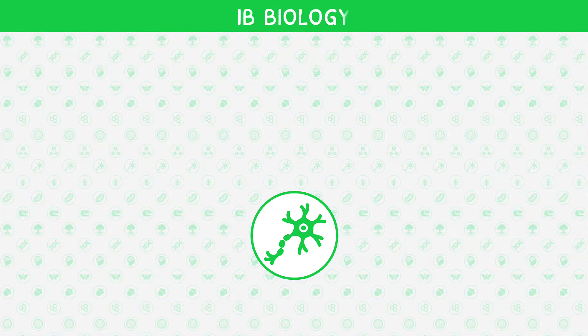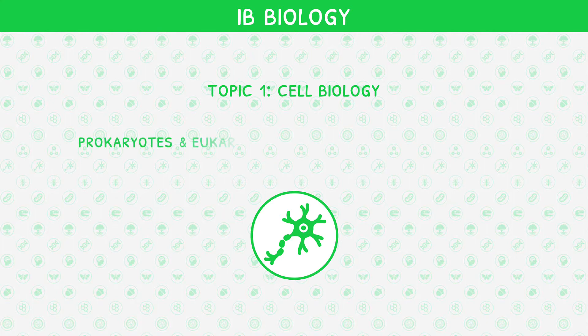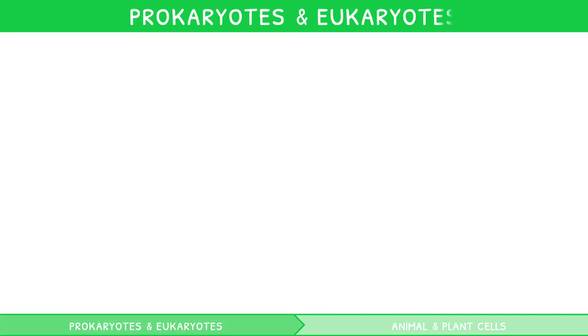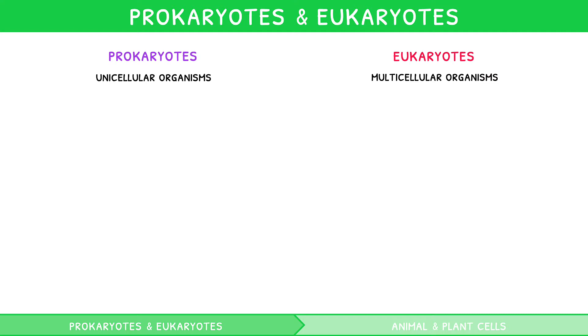Welcome back to our IB Biology video series. This is the second video in IB Biology Topic 1, Cell Biology, where we will be looking at prokaryotes and eukaryotes, including animal and plant cells. All cells can be categorised into two large groups, prokaryotes and eukaryotes. Generally speaking, the largest difference between these two groups is that prokaryotes are unicellular organisms, whereas eukaryotes are multicellular organisms, but we will go into the comparison in more depth later in this video.